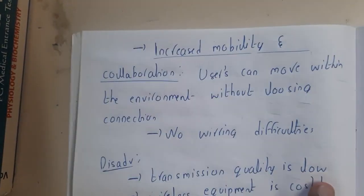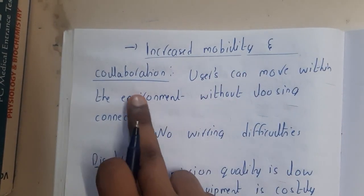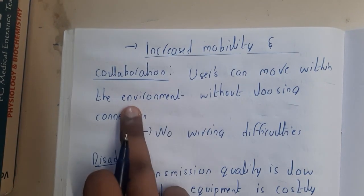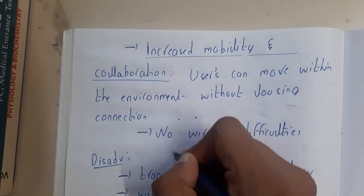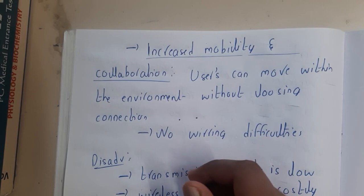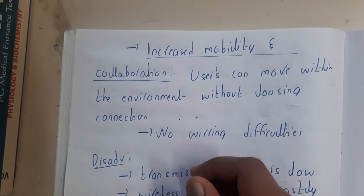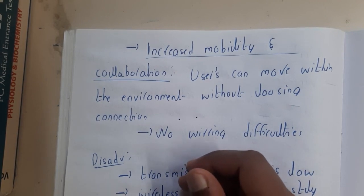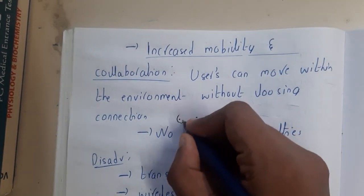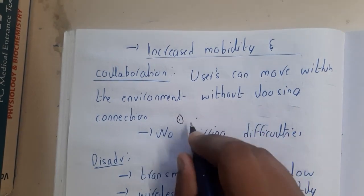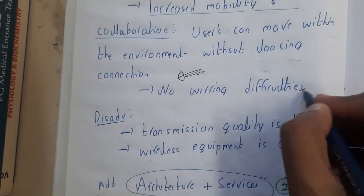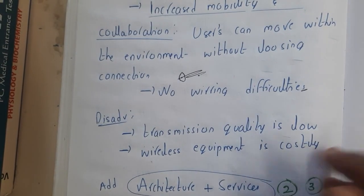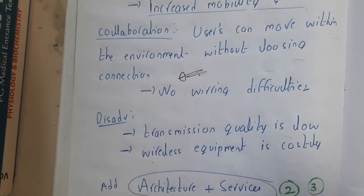Similarly, there is increased mobility and collaboration. Users can move within the environment without losing connection. For example, you can move through all the rooms in a house and still have the connection — there is no pressure to stay in one specific room. There are also no wire difficulties to deal with.